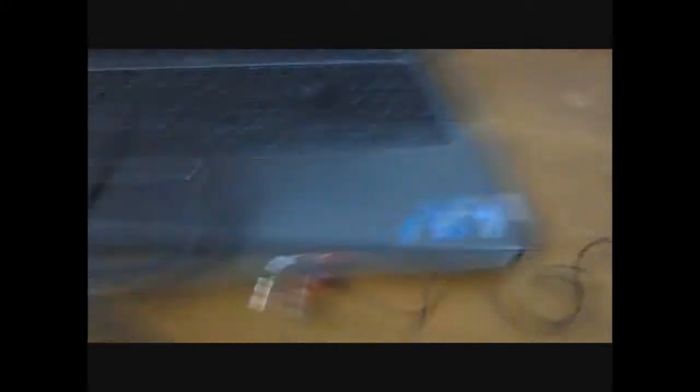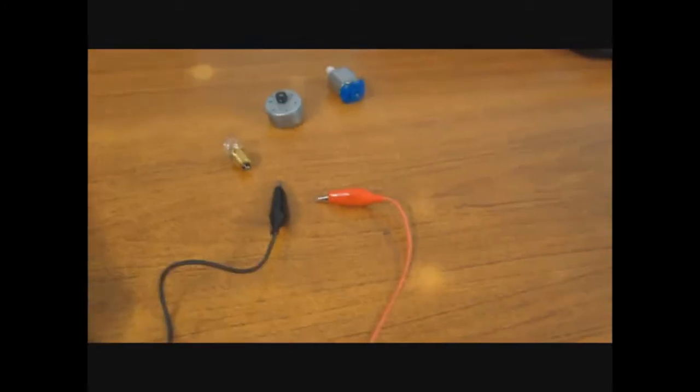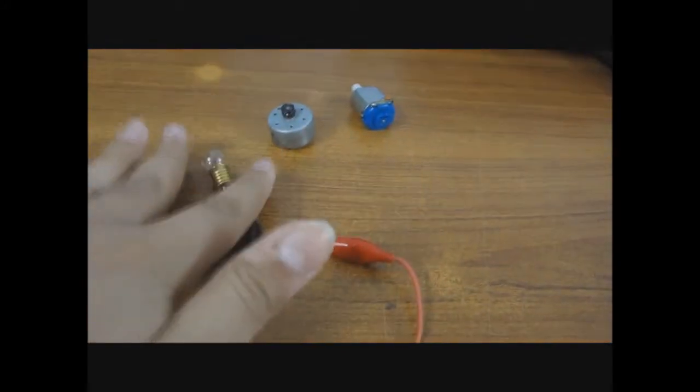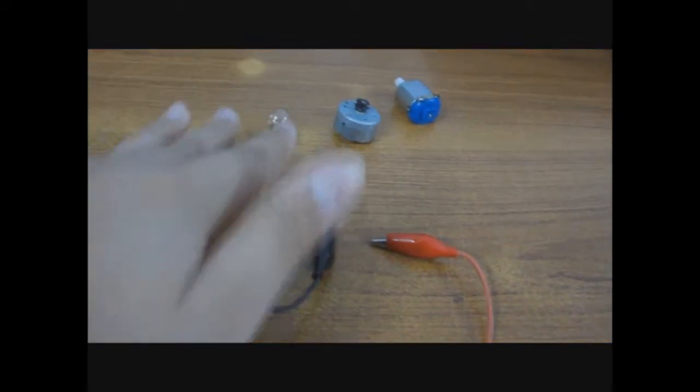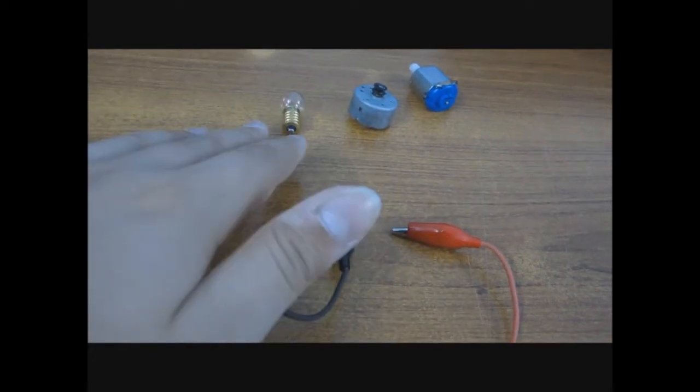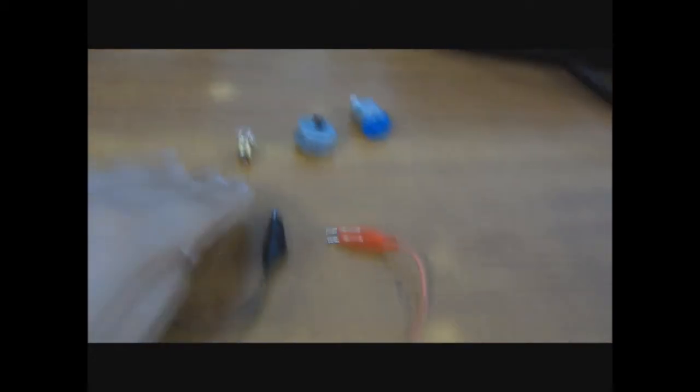So that was it guys, that was the how-to video on how to power small electronic devices like some motors or some small fans which run on AA batteries or AAA batteries.